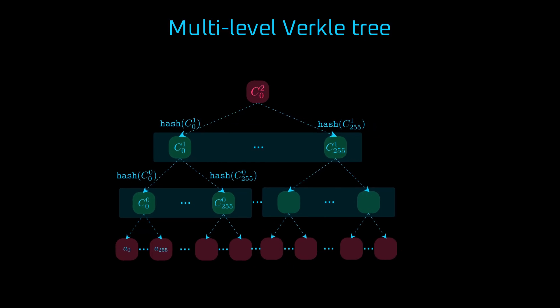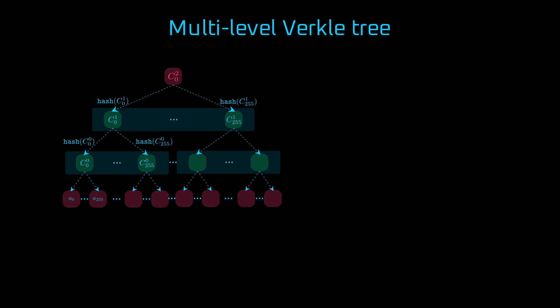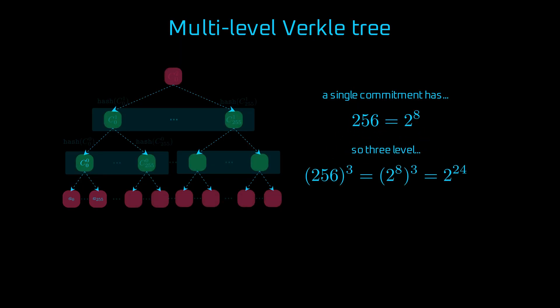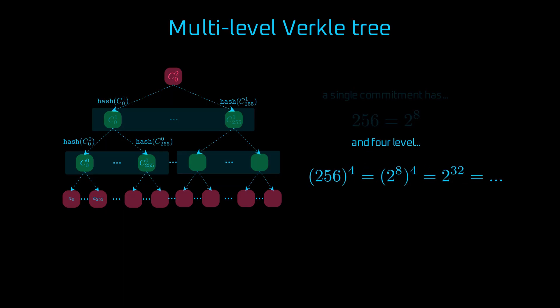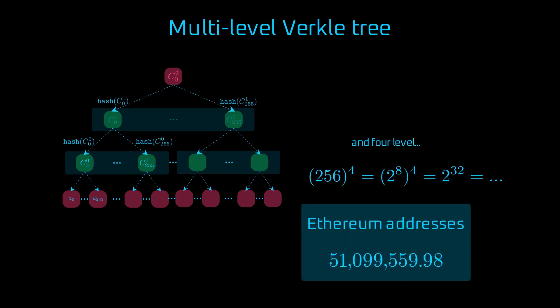With simple math, we can estimate how much data a multi-level verkle tree can handle. And it's impressive. One commitment in the verkle tree holds 256 values, which is 2 to the 8th power, while for three levels, the number is 2 to 24th. And four-level deep verkle tree offers more than enough space to squeeze in all of the Ethereum accounts.